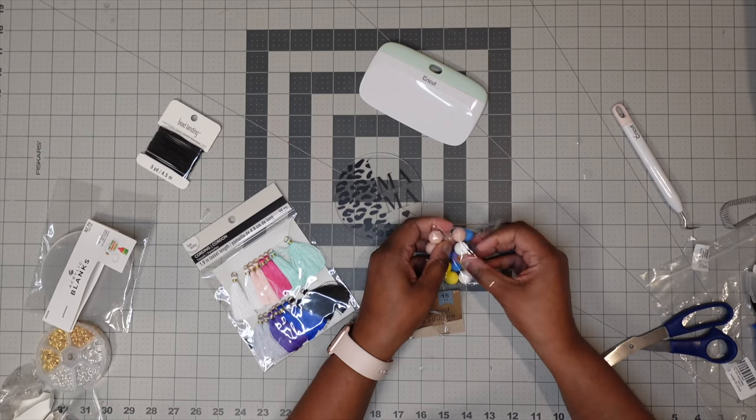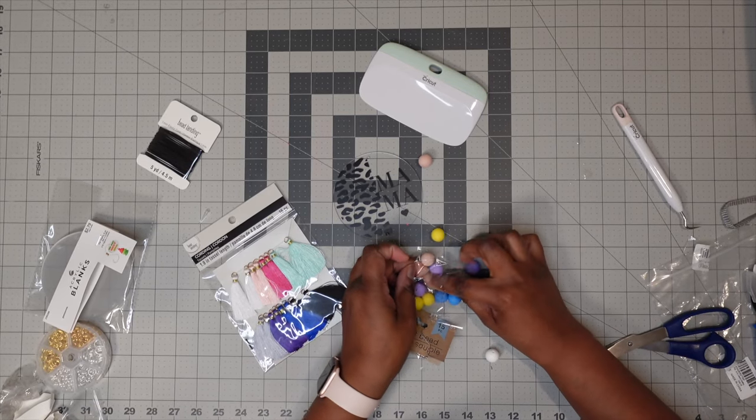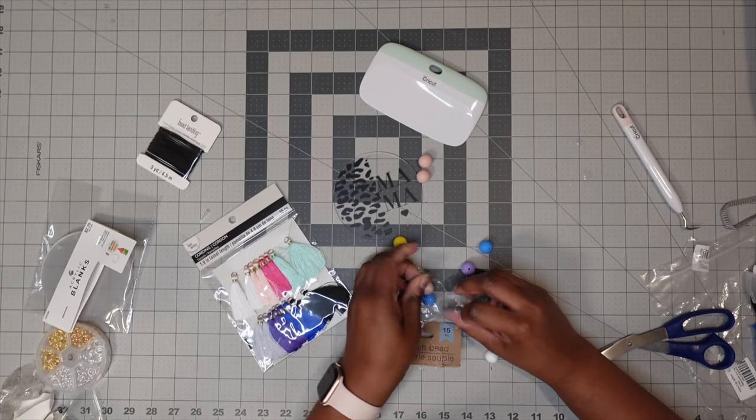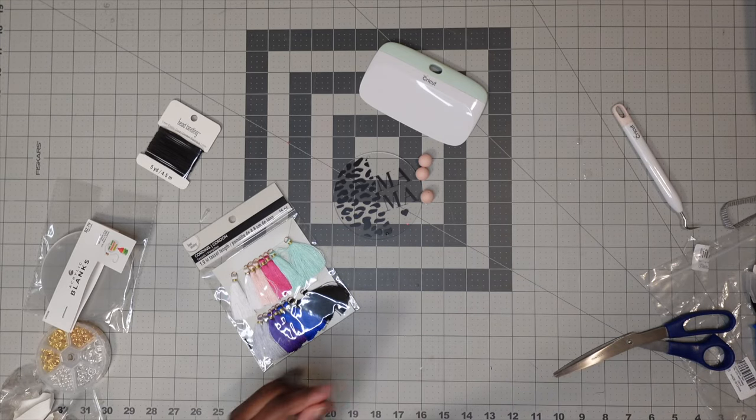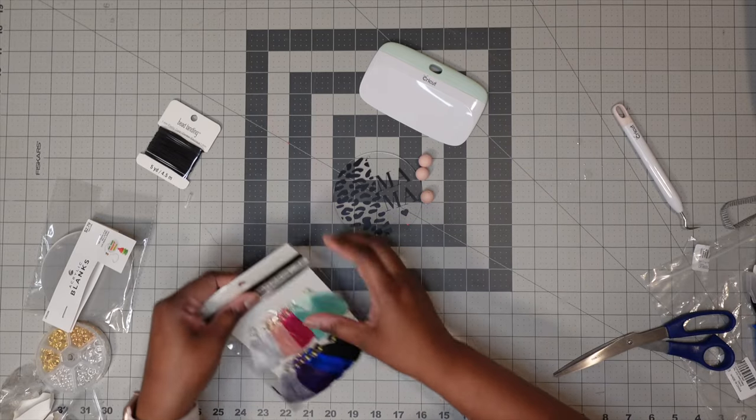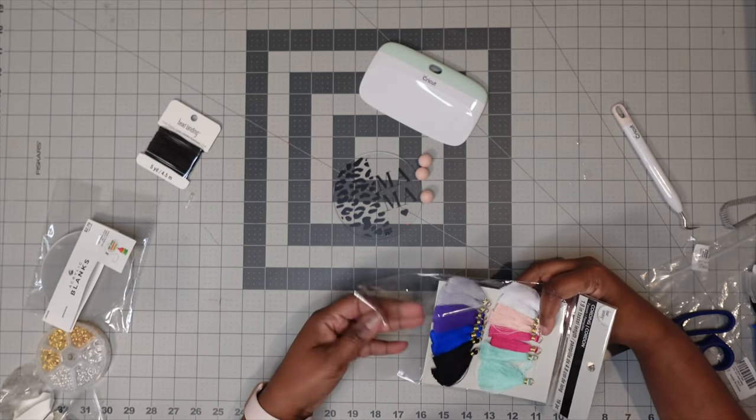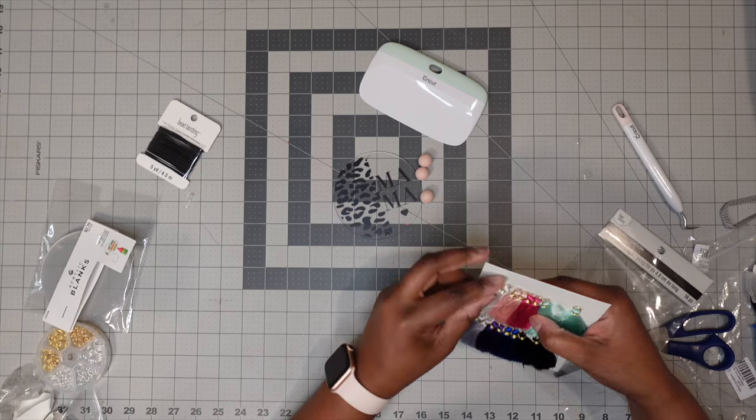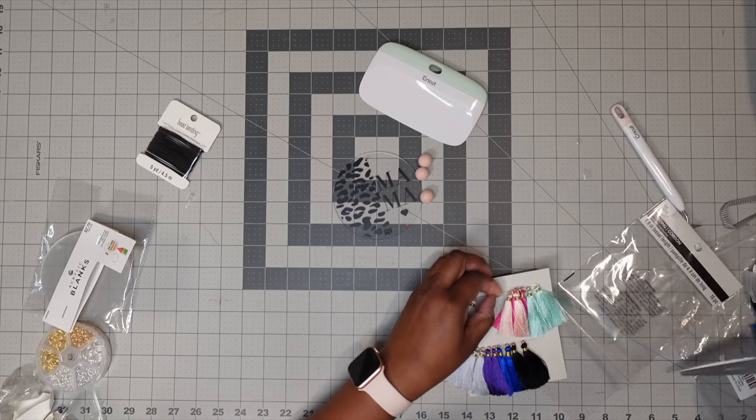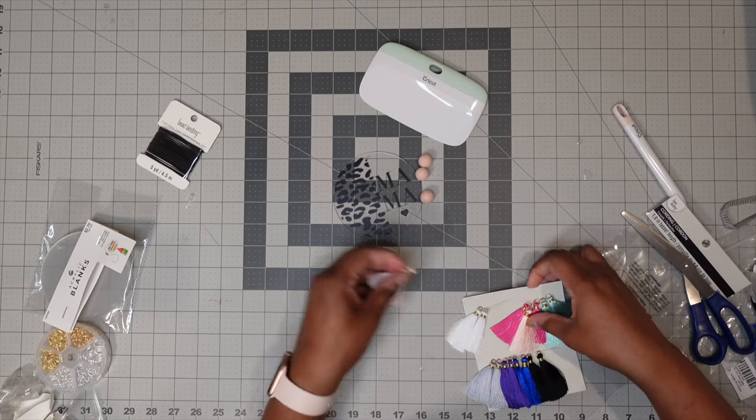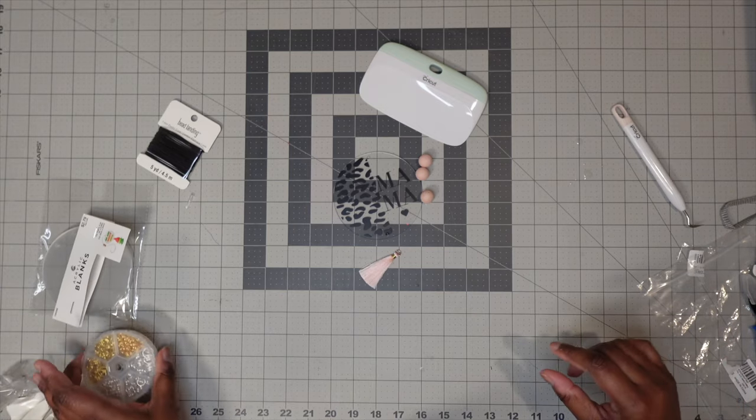So we are going to go with the pink because I'm going with pink and black. So I'm going to take out, I don't know if I'm going to go with two or three. So I'm going to go ahead and just take out the three of those. And then I'm going to take out my pink tassel. Let's go ahead and check it out. So let's get started. Let's try this.